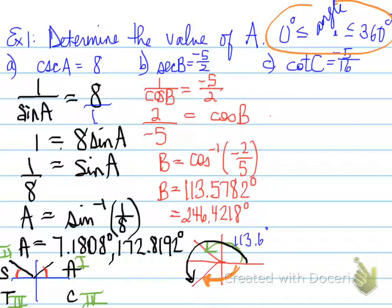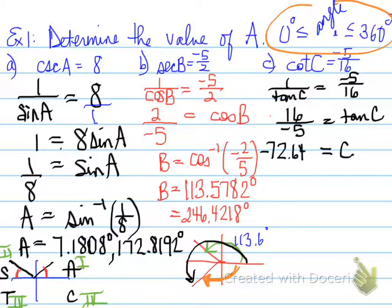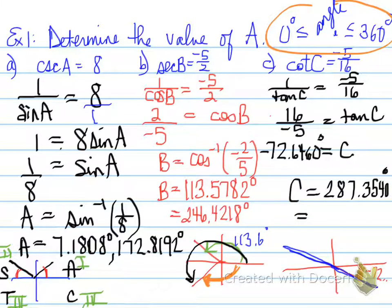Let's look at the last one. 1 over tan C equals negative 5 over 16. Cross multiply and divide, you're going to get 16 over negative 5 equals tan C. Tan inverse, and you find out that C equals negative 72.6460. What we can do is determine the negative angle. The negative angle turns out to be in the fourth quadrant, because the negative angle is also measured from the positive x axis, but it's going in a clockwise direction. So the value of C for one of the angles is going to be 360 minus 72.6460, which turns out to be 287.3540 degrees.